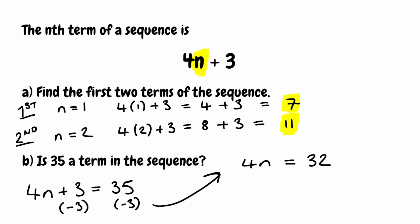Now we're solving for n. We've got 4 times n, so I'm going to divide both sides by 4. 4n divided by 4 gives us n, and 32 divided by 4 gives us 8. So n is equal to 8. Because we've got an integer, we know that 35 is in the sequence — it's actually term number 8.